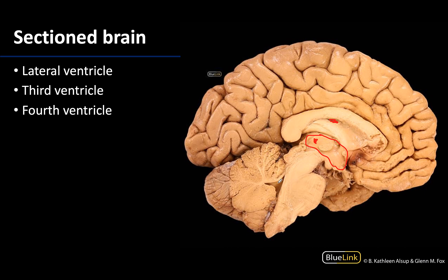The fourth ventricle will lie between the brain stem — here's your brain stem — and your cerebellum, so the fourth would be right around this region here. This one is a bit more pyramid-shaped, which you can actually see fairly well on this particular donor.